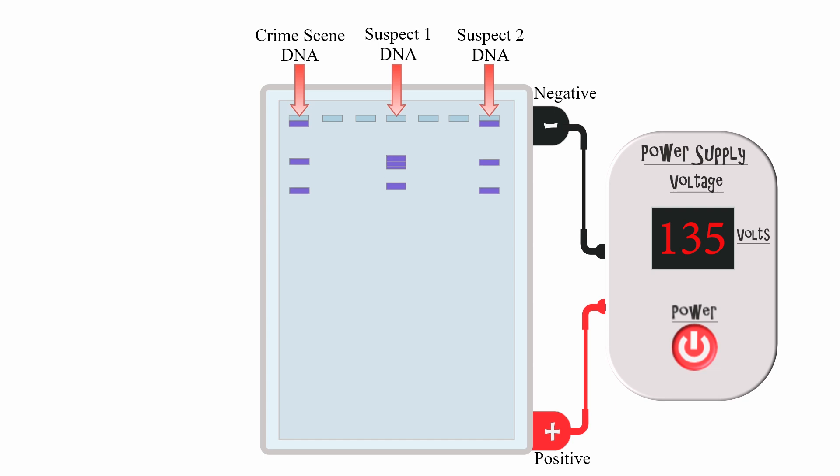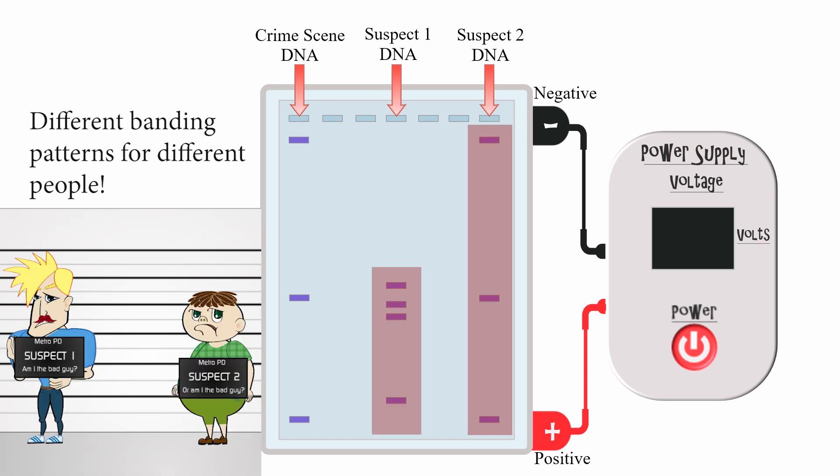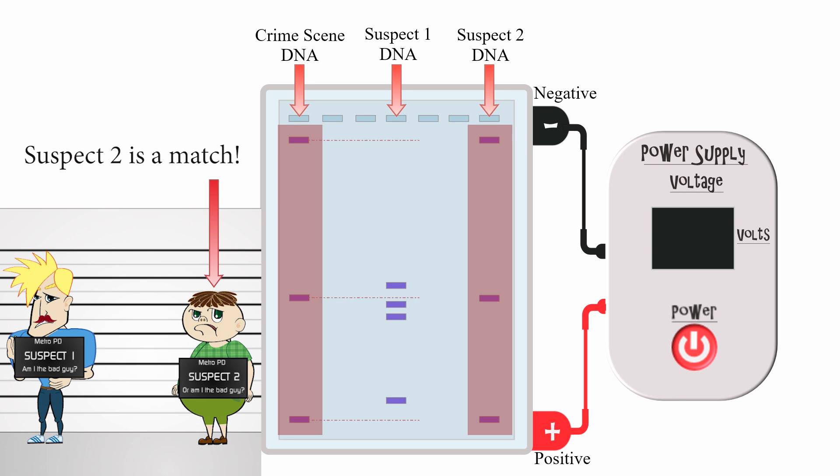The end result is a banding pattern, with small fragments making up the bands that travel farthest, and large fragments making up the bands that don't travel far. Because our suspects have different sized restriction fragments, their banding patterns won't match each other. If, however, one of our suspects matches the crime scene pattern, this is good evidence that they were present at the crime scene.